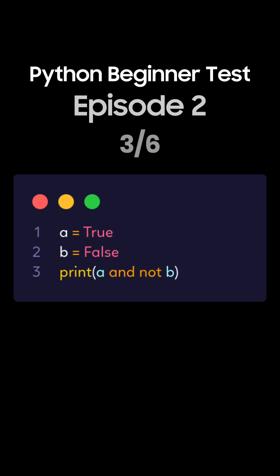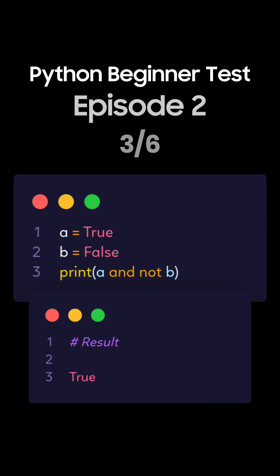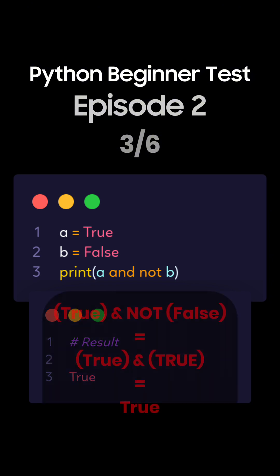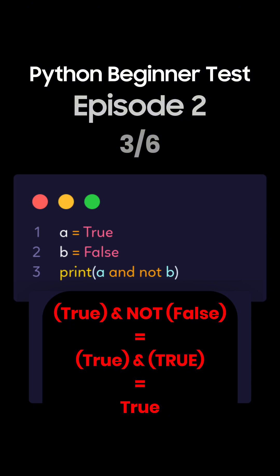Question 3. What's the output of this Python code using logical operators? This is the correct answer. The negation of b makes it true, and true and true evaluates to true.